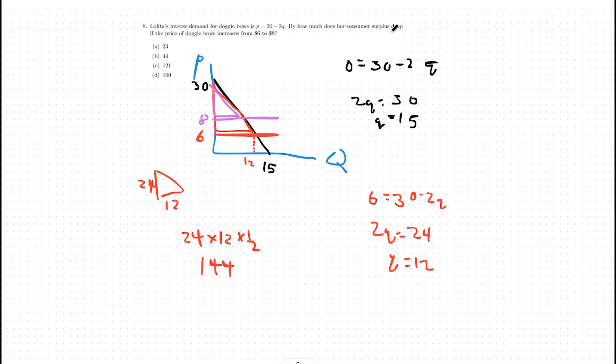So how much does our consumer surplus decrease? That's a good sign that we're in the right direction. So this is our new triangle. That's going to be 30 minus 8 instead, so a height of 22.